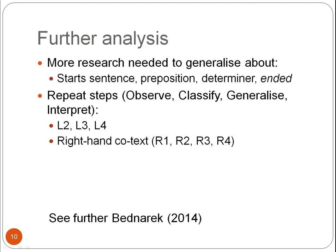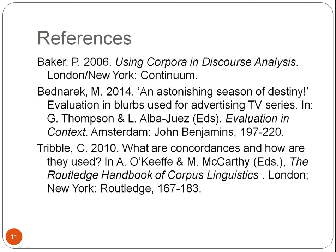Now, this was just a first glimpse into the data to illustrate the procedure for analyzing concordances. Of course, we would need to do more research to generalise about the other observed evidence, and we would need to repeat all four steps looking at other positions on the left — L2, L3, and L4 — so word forms occurring 2, 3, and 4 to the left of 'season', and of course words occurring to the right of 'season', which we have completely ignored here. If you want to know more about this research, have a look at my 2014 paper on evaluation in DVD blurbs. That's it, and here are the references.